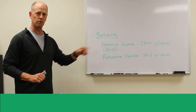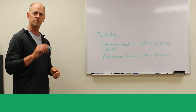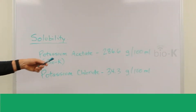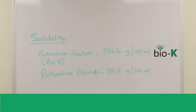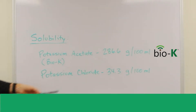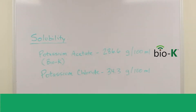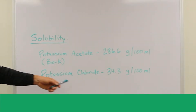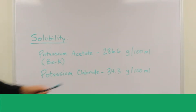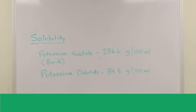Here on the board are two examples of solubility. This potassium acetate, which Nature's Alpine Solutions markets as Bio-K, has a solubility of 286.6 grams per 100 mils of water. Secondly, here is potassium chloride, with a solubility of 34.3 grams of material per 100 mils of water.